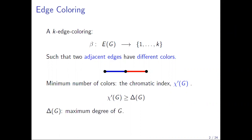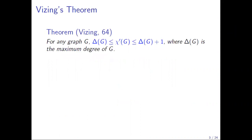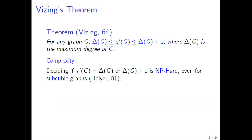So we need at least delta colors. One of the first theorems on edge coloring is Vizing's theorem, published in 1964. This proved that in the worst case, you need at most one additional color to color the edges of your graph — either delta of G colors or delta of G plus one colors. It is actually NP-hard to compute the chromatic index, even for simple graphs, as proved in 1981.